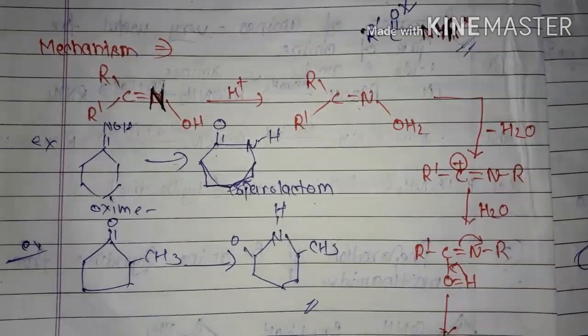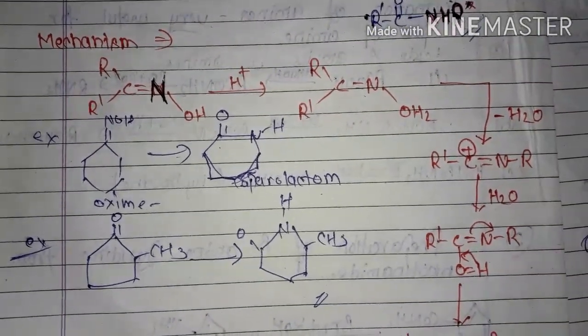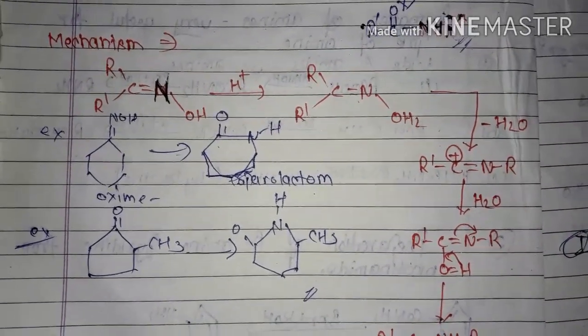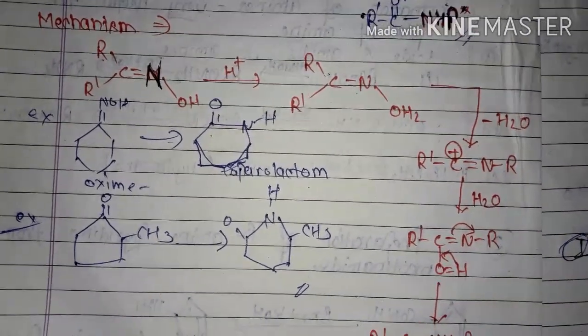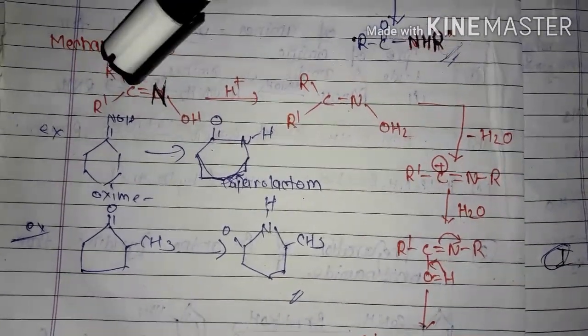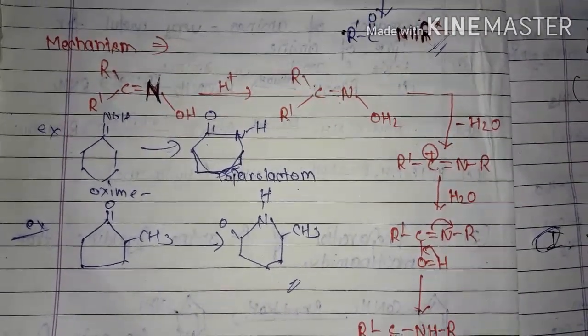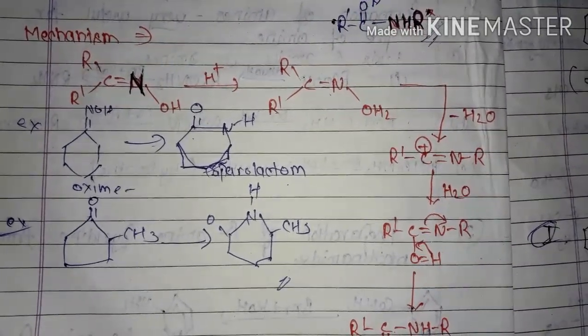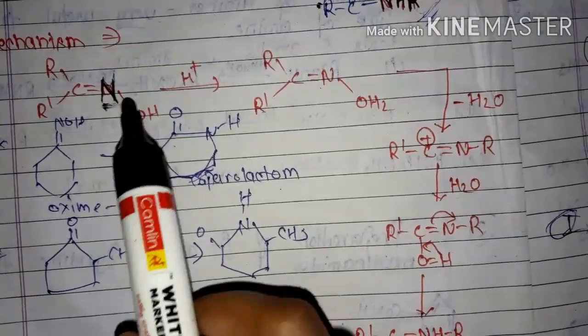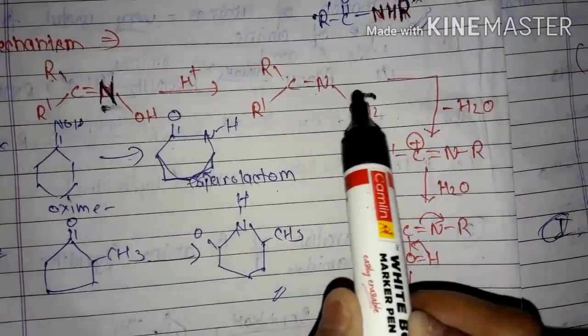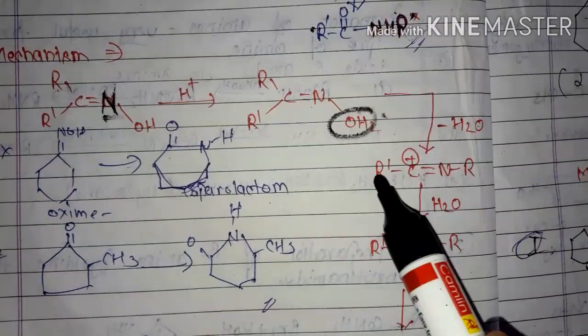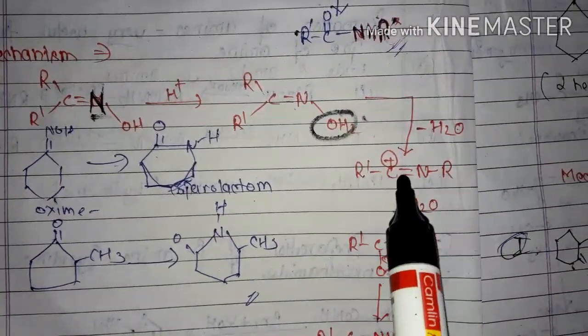Now let's see the mechanism. With mechanism, examples are also asked, so the mechanism will be the same for all, but I will give you examples whose mechanism you have to make in the same way. Nothing will change. First, let's see the mechanism. You take the product and react it in presence of H+. You can see that the O-H you took, H will add there and you get OH2.